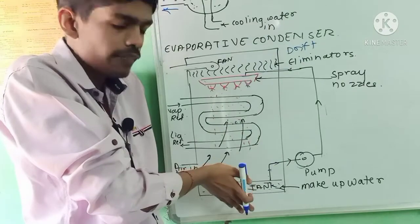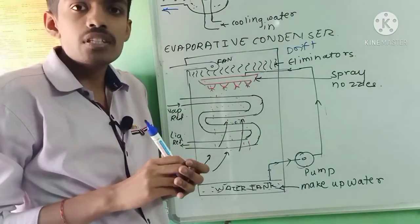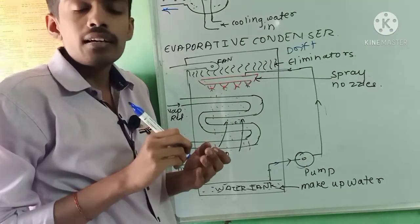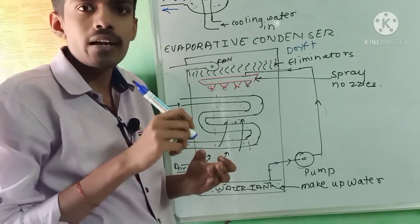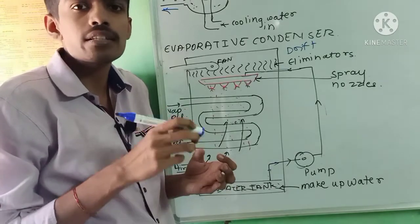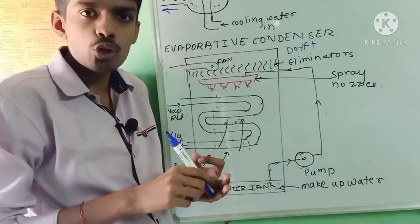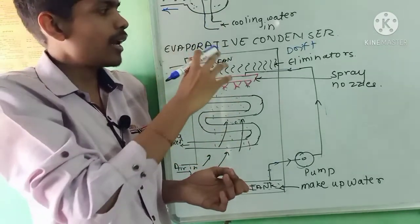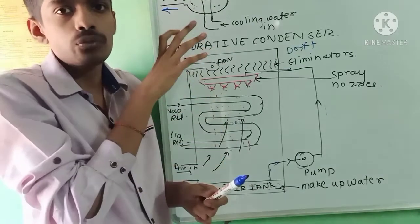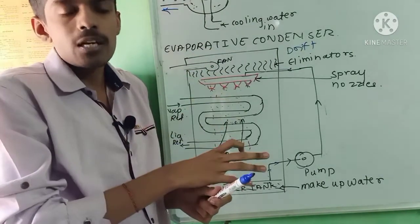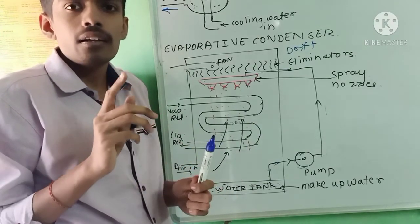So today we have covered the types of condensers: air-cooled condenser with forced and natural convection types, water-cooled condenser with shell and tube, tube-in-tube, and shell and coil types, and finally the evaporative condenser. If you have not understood any part of the condenser concept, please ask in the comments and I will definitely reply. Thank you.